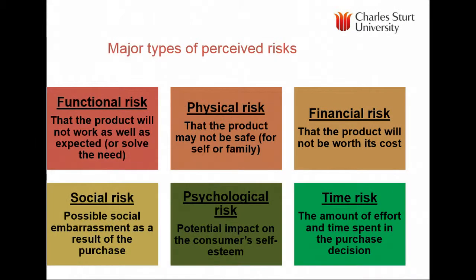Here are the major perceived risks, which are important because they limit search. Functional risk leads consumers to rely on a well-known brand. Physical risk leads to relying on safety warnings. Financial risk may lead to choosing cheaper brands or, alternatively, relying on a well-known brand. Social risk is similar, and psychological and time risk are also factors that shape how much search consumers undertake.